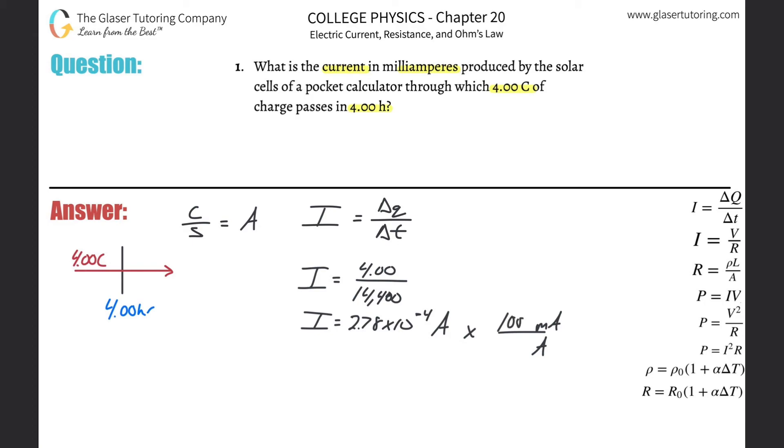So we can multiply that simply by 1000, and the current here will then become 2.78 times 10 to the minus 1. Now, or in other words, if you had to convert that not into scientific notation into standard notation, it would be 0.278 milliamps.